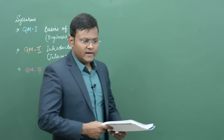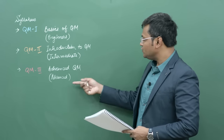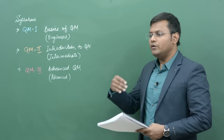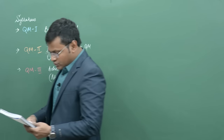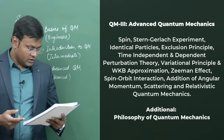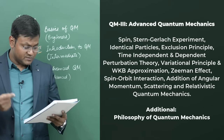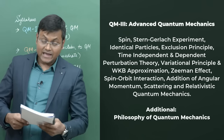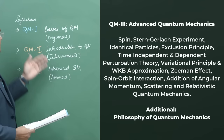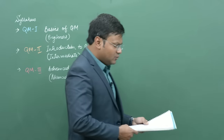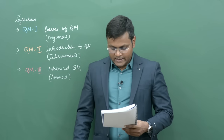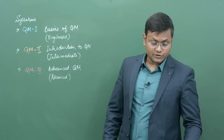Once that section is done, we'll move to advanced quantum mechanics topics, mostly for students in the later years of undergrad or in a postgraduate course. We'll cover spin, the Stern-Gerlach experiment, identical particles, the exclusion principle, perturbation theory, the variational principle, the WKB approximation, Zeeman effects, spin-orbit interaction, and addition of angular momentum. If time permits, we may also cover scattering and relativistic quantum mechanics, and possibly some lectures on the philosophy of quantum mechanics — the measurement problem, EPR paradox, Bell's theorem, Schrödinger's cat, and so on.